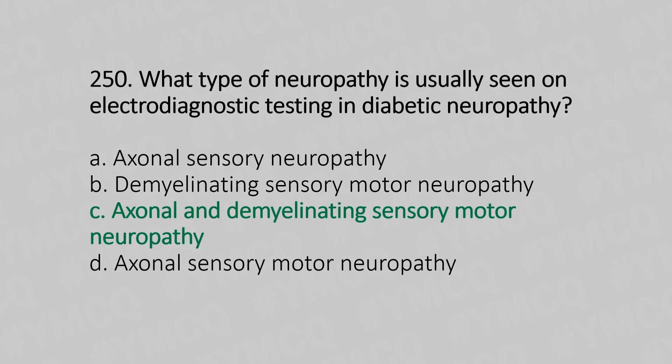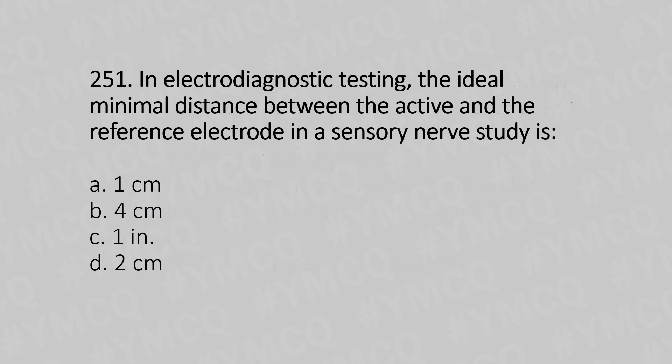Question 251: In electrodiagnostic testing, the ideal minimal distance between the active and the reference electrode in sensory nerve study is — Option A: 1 cm. Option B: 4 cm. Option C: 1 inch. Option D: 2 cm. The answer is Option B, 4 cm.